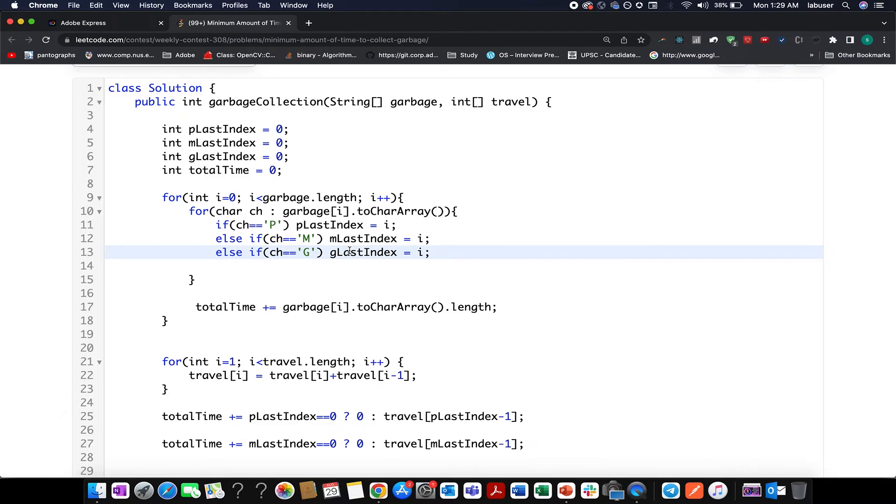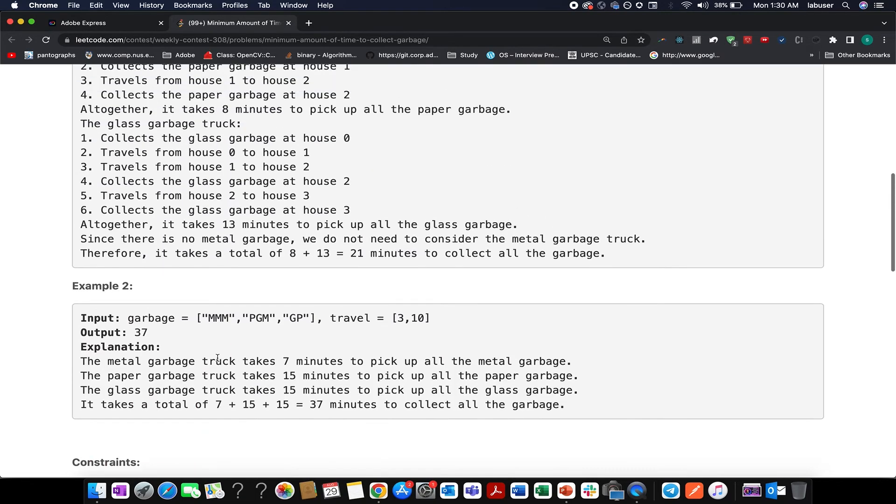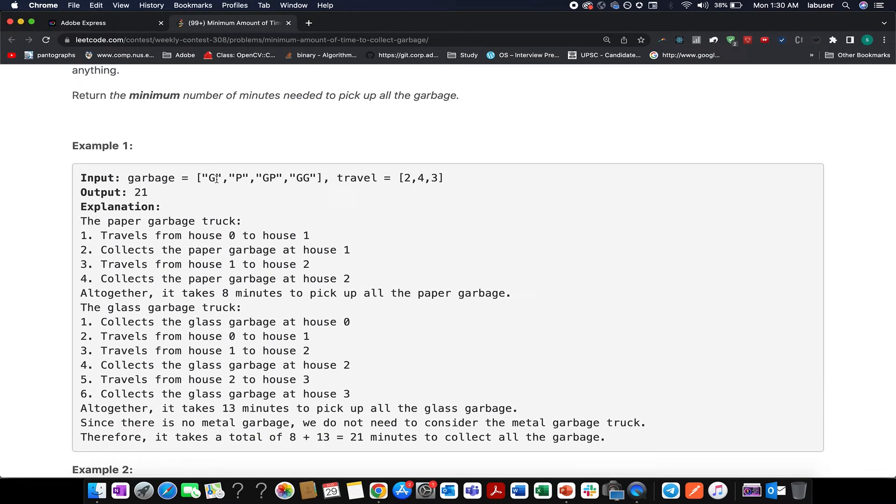Along with this, I also update my total time equal to garbage at i to character array dot length. So this gives me the number of elements that are there in my garbage string and I simply add its length into the total travel time because in the question it says that one unit will be used for each character. Let's proceed ahead. At line number 21, I have started iterating over a loop and I create the prefix sum using the travel array.